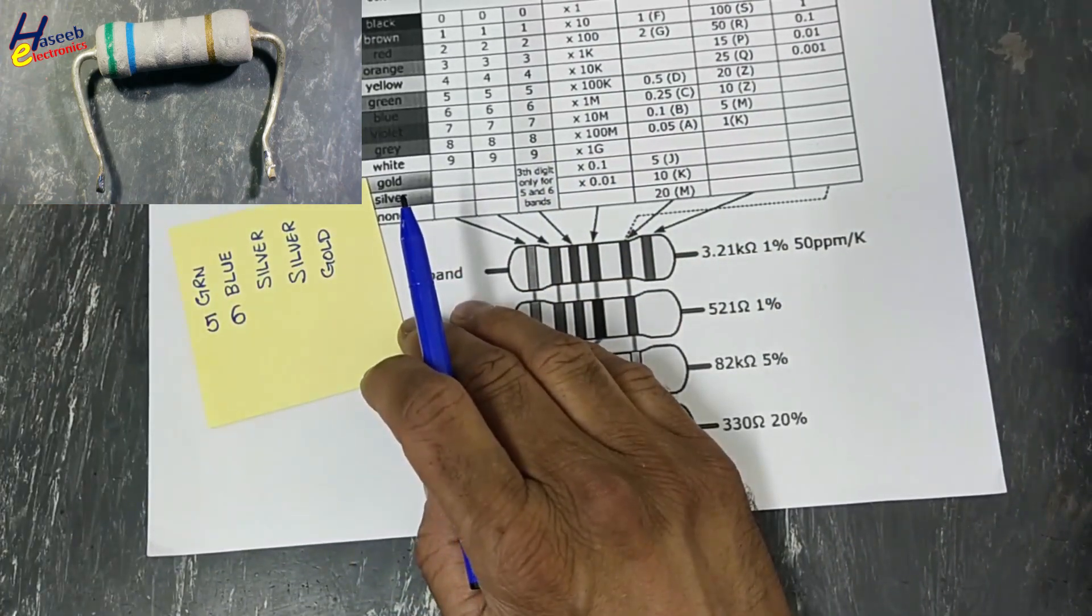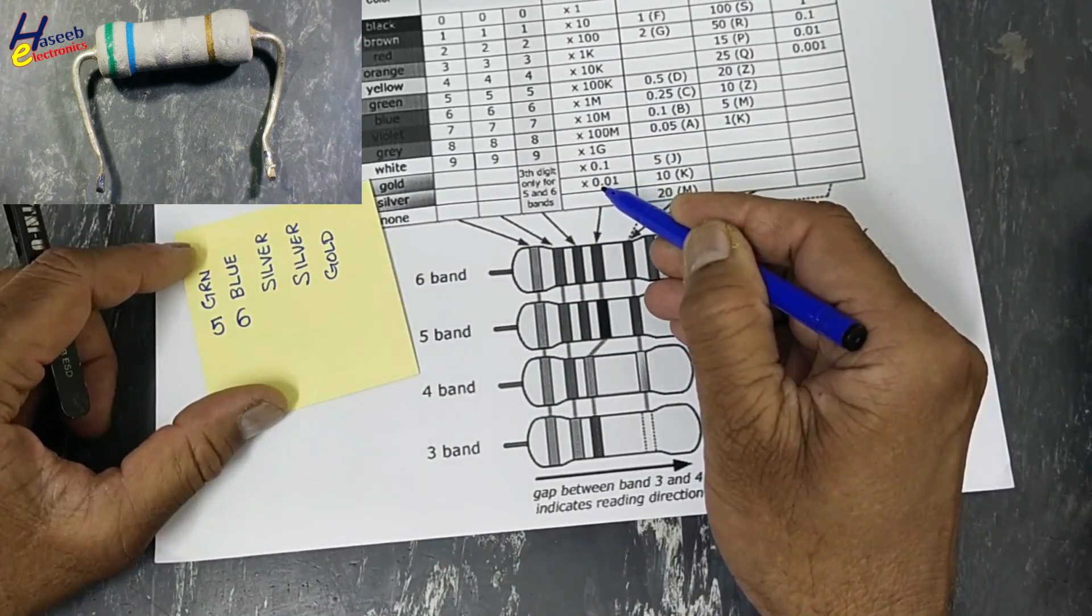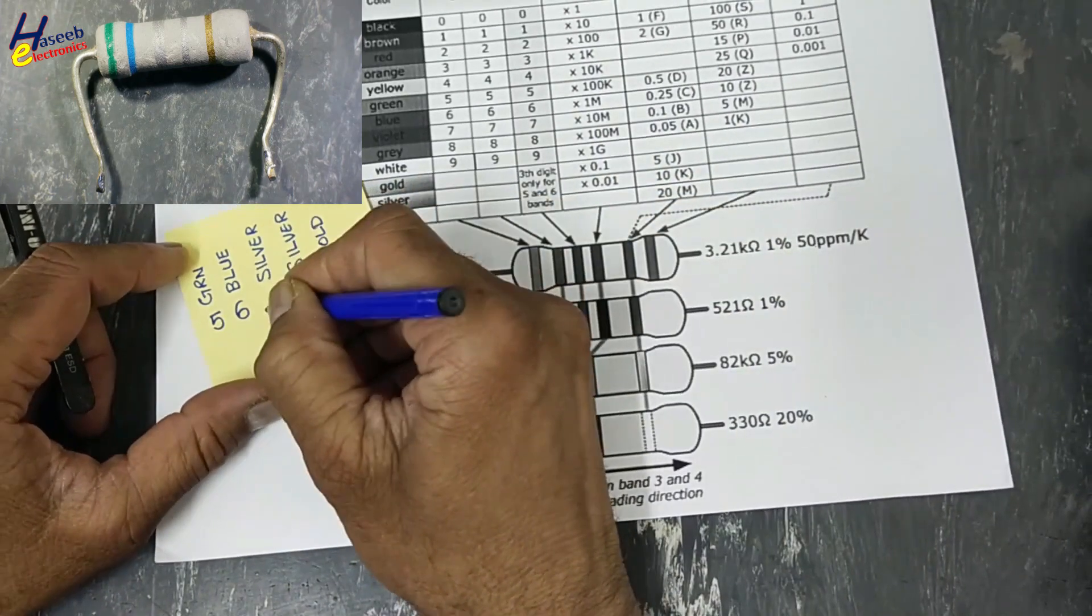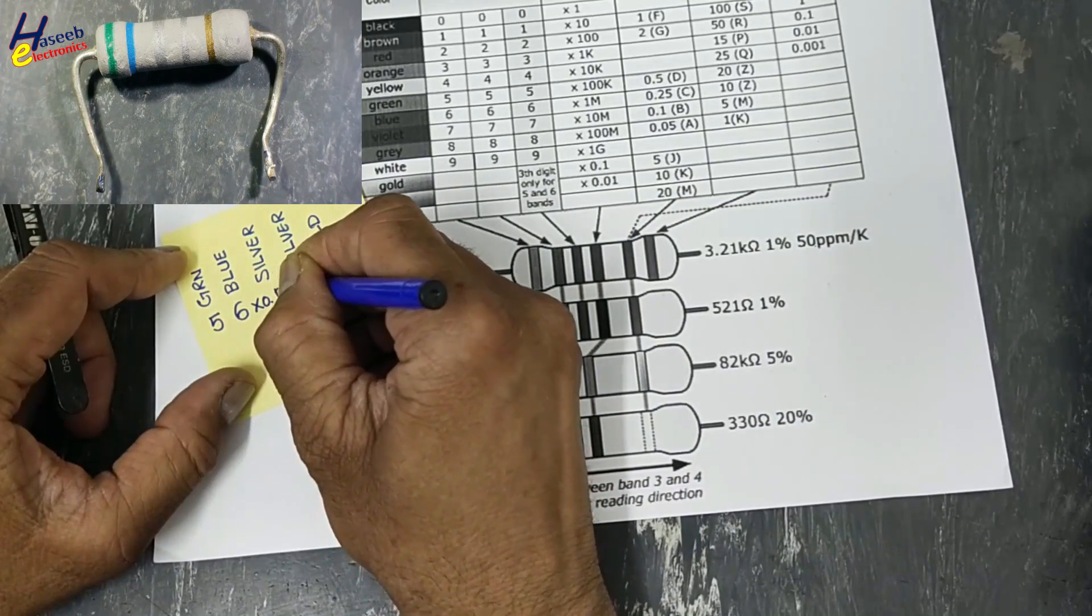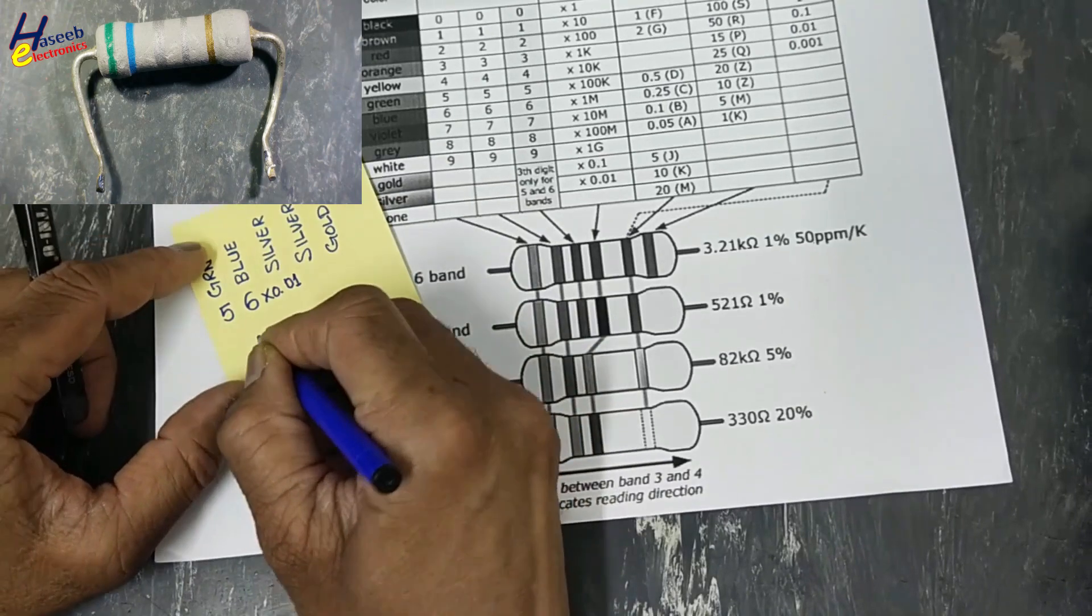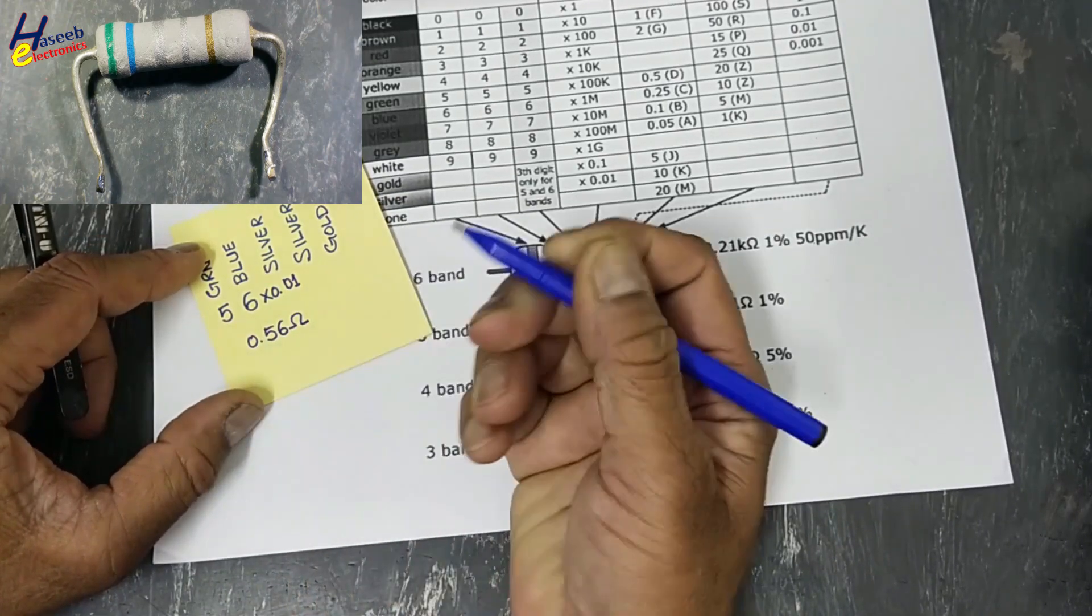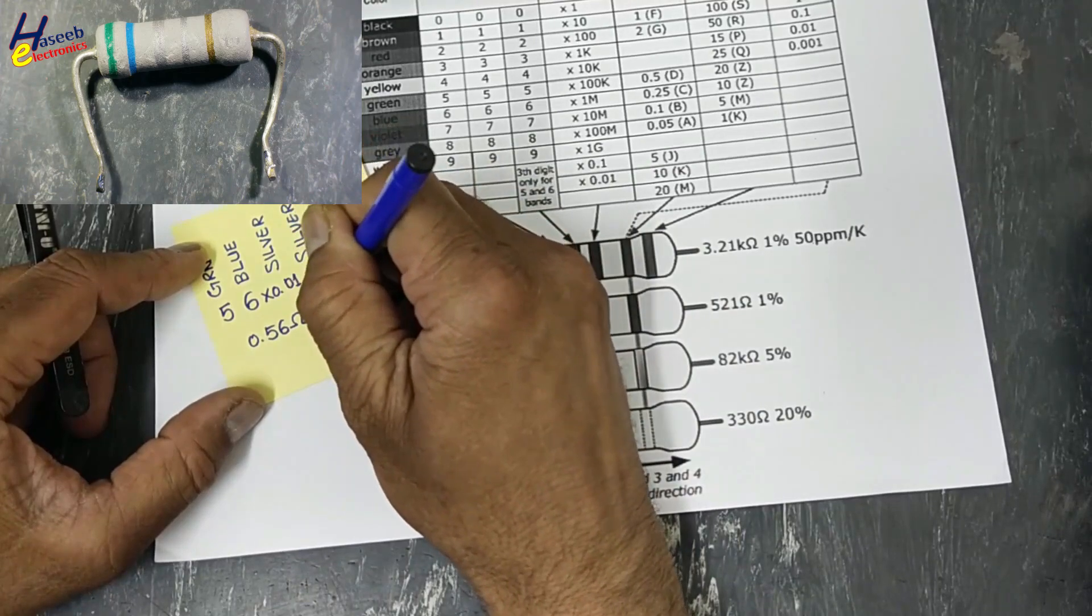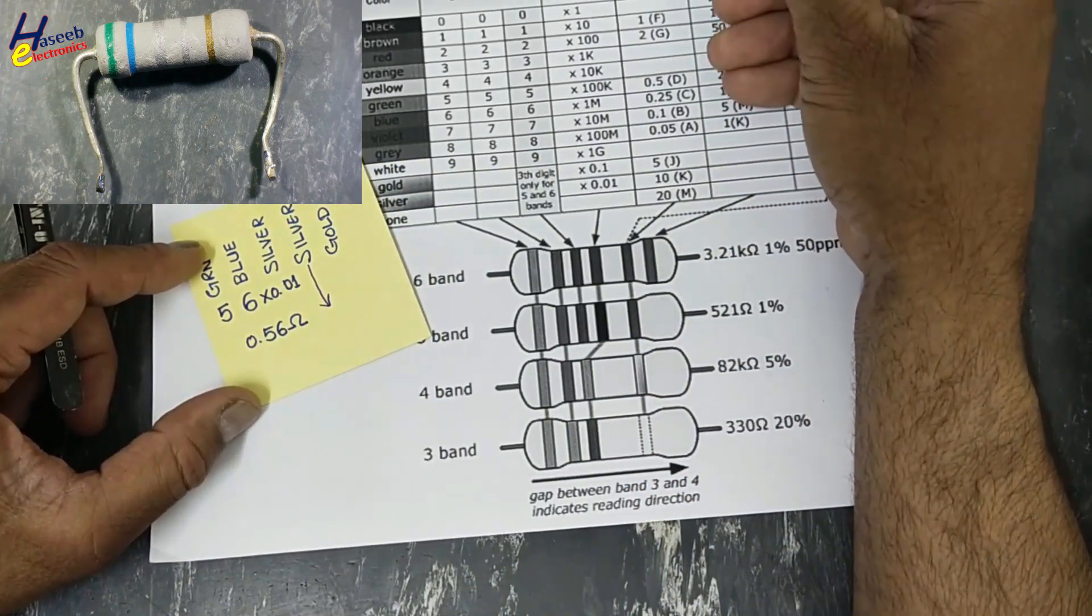When it is silver, we will multiply with 0.01, multiply with 0.01. That means it is a 0.56 ohm resistor. Then this silver is tolerance. In the tolerance band, when it is silver, it is 10 percent.